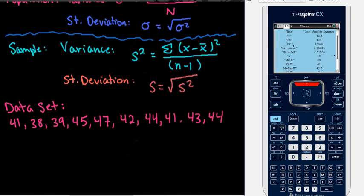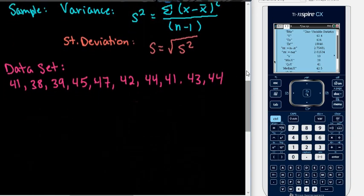The nice thing about the graphing calculator is right here where it says SX, we have 2.75681. That gives us our standard deviation of our sample.